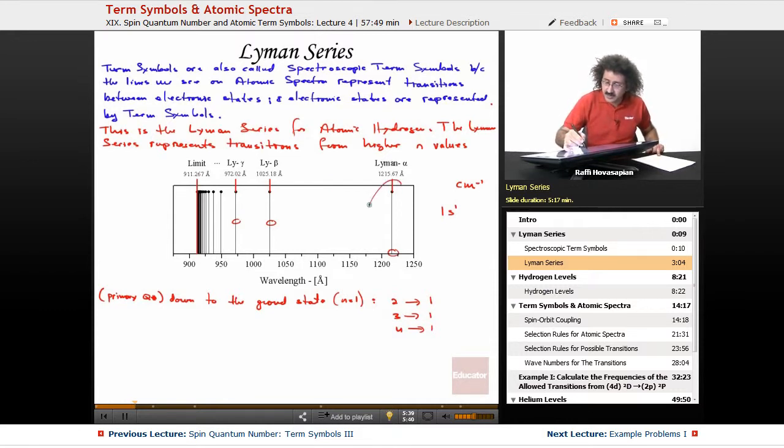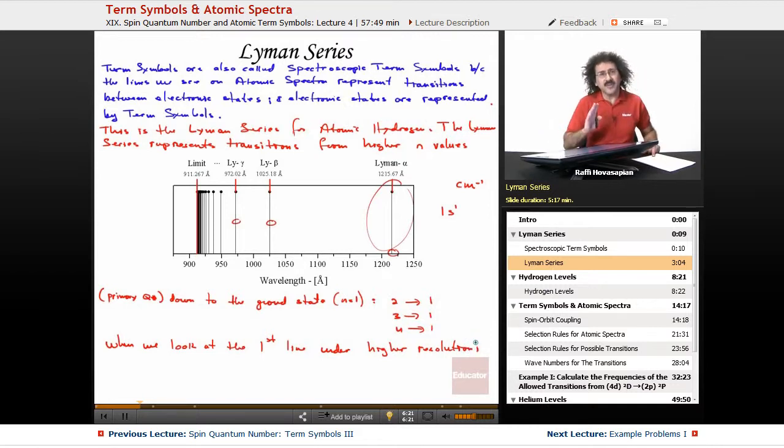Now, when we look at the first line, when we actually look at that line under a higher resolution, in other words when we magnify it, when we look at these lines for the Lyman series, when we look at the first line under higher resolution, we end up actually seeing two separate lines. So this single line that appears in this spectra is actually made up of two individual lines that are really close together.